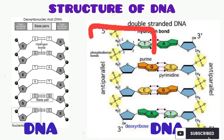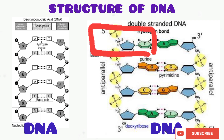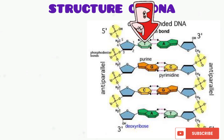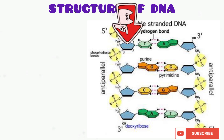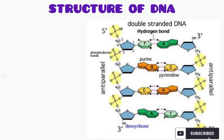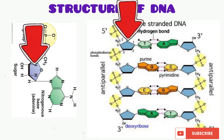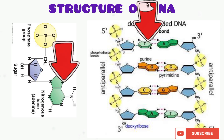Now let's take a look at a particular nucleotide. You can see the phosphate group, the nitrogenous base, and the sugar. So the components of a nucleotide are the phosphate group, the sugar, and the nitrogenous base.